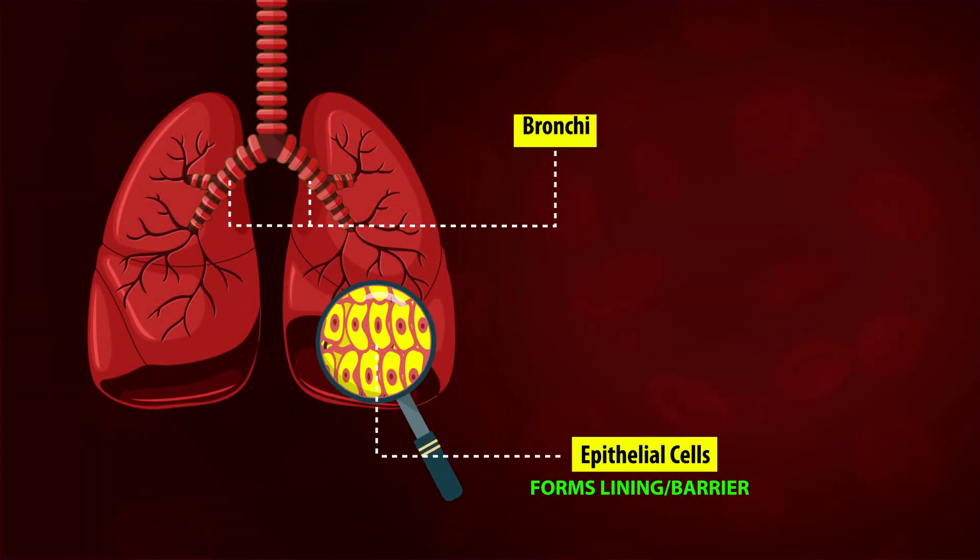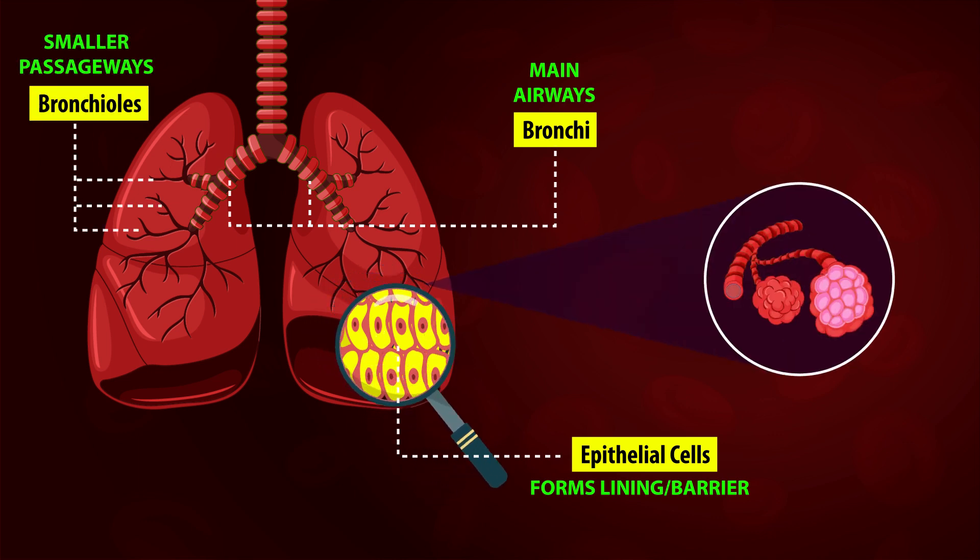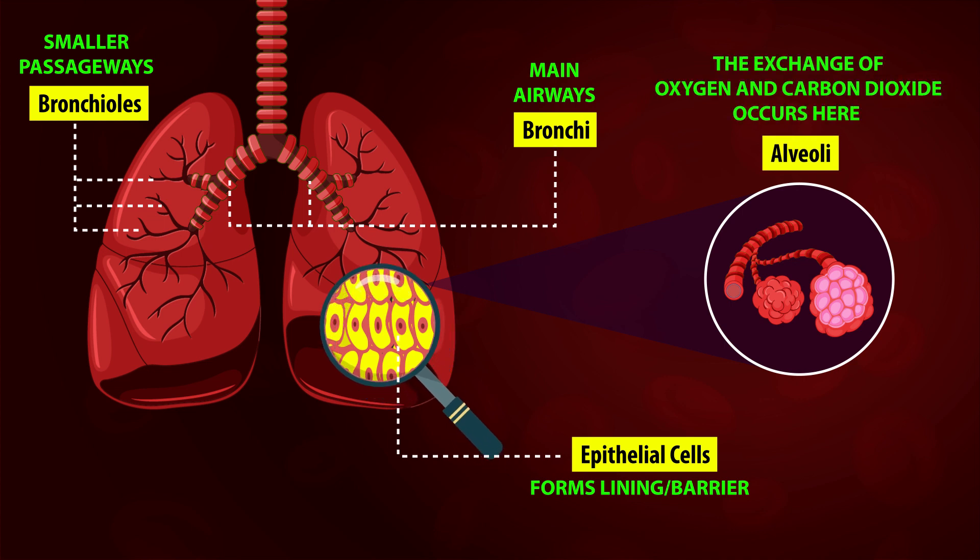Epithelial cells of your bronchi, which are the main airways in your lungs, bronchioles, the smaller passageways, and most importantly, the tiny air sacs at the end called the alveoli, are the main targets.